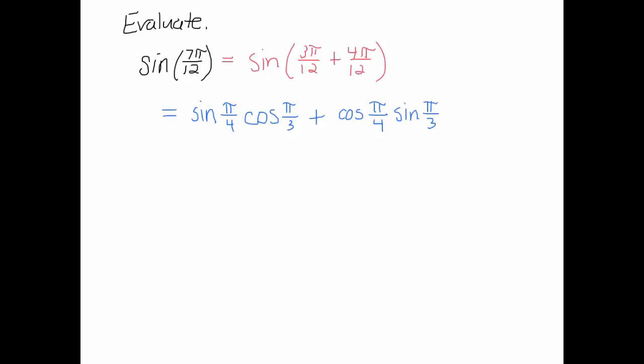And you will start to memorize that with practice. It doesn't work if you don't keep doing lots of problems. So now let's see if we can do this. Sine of pi over 4, that's going to be root 2 over 2. Cosine of pi over 3, that's going to be 1 half. Cosine of pi over 4 is the same thing, root 2 over 2. And sine of pi over 3, that is root 3 over 2.